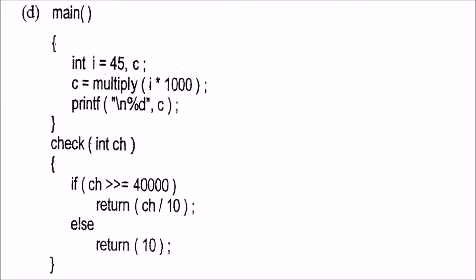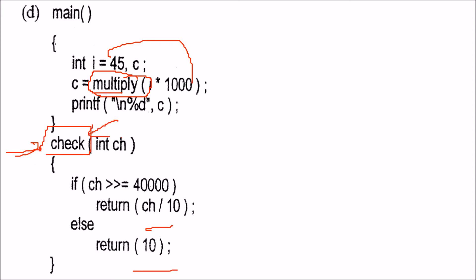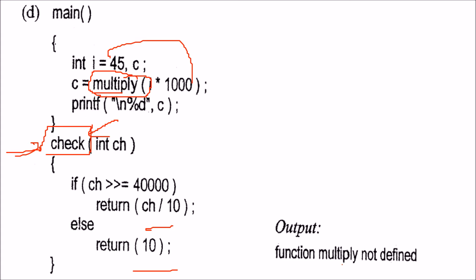Next, we are sending 45 to multiply i into 1000 and trying to evaluate some value. But the problem is there is a multiply function which we have called but there is no definition of multiply. So there will be a problem because function multiply is not defined.